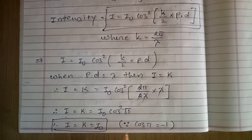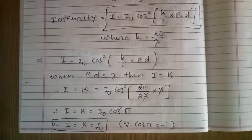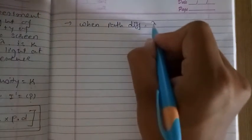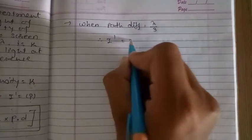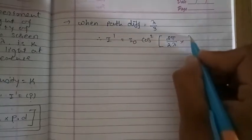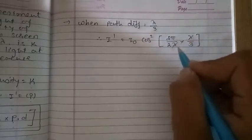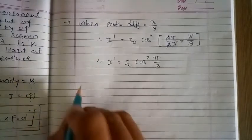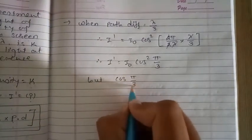So the intensity of each wave is I equals K equals I₀. Now we have to find the intensity where path difference is lambda by 3. When path difference is equal to lambda by 3, intensity is I dash. So I dash equals I₀ cos square of (2 pi by lambda by 2, into lambda by 3). Here lambda cancels and 2 cancels, so I dash equals I₀ cos square (pi by 3).